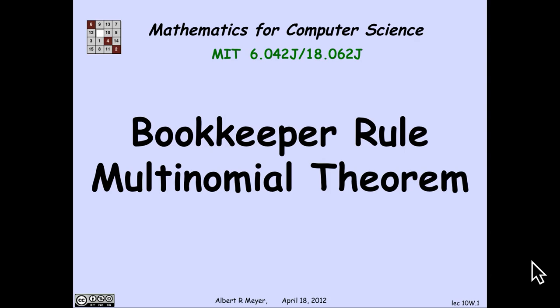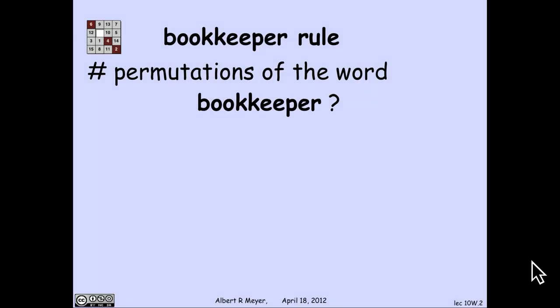The binomial theorem extends to a thing called the multinomial theorem, where instead of taking a product of a sum of two things, you take the product of a sum of k things. And what underlies it is a rule that we're going to call the bookkeeper rule.